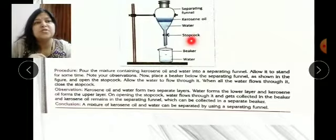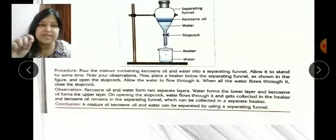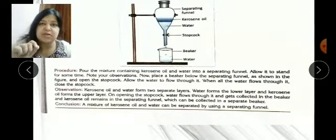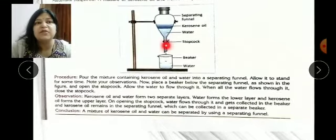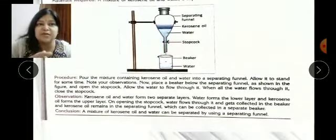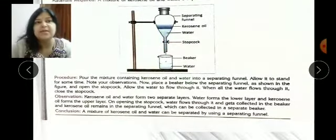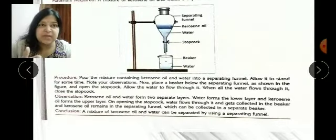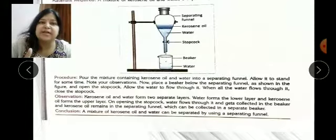We should open this stopcock, which is a knob-like part of the separating funnel. When you open it, slowly water will come out in the form of water droplets as you can see here, and we can collect it in an empty beaker.